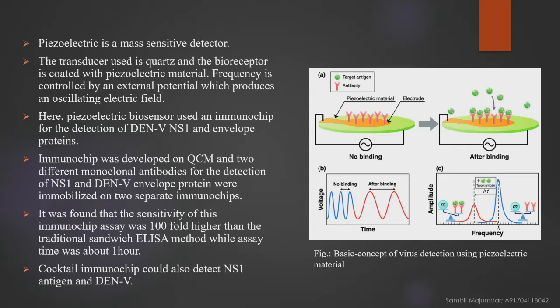Frequency is controlled by an external potential, which produces an oscillating electric field. It was found that the sensitivity of this immunochip assay was 100-fold higher than the traditional sandwich ELISA method, while the assay time was about one hour. A cocktail immunochip could also detect NS1 antigen and DEN5. This figure shows the basic concept of virus detection using piezoelectric material.